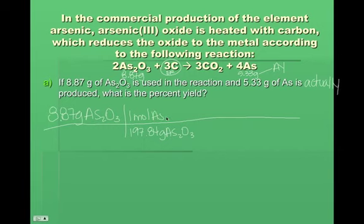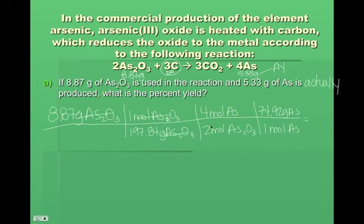For every mole, that is a two, I swear. And then now that we're in moles of arsenic 3 oxide, we can use our mole ratio from the equation up here. So for every two moles of arsenic oxide, we're going to get four moles of arsenic. And then on the periodic table, you'll see that one mole of arsenic has a mass of 74.92 grams.